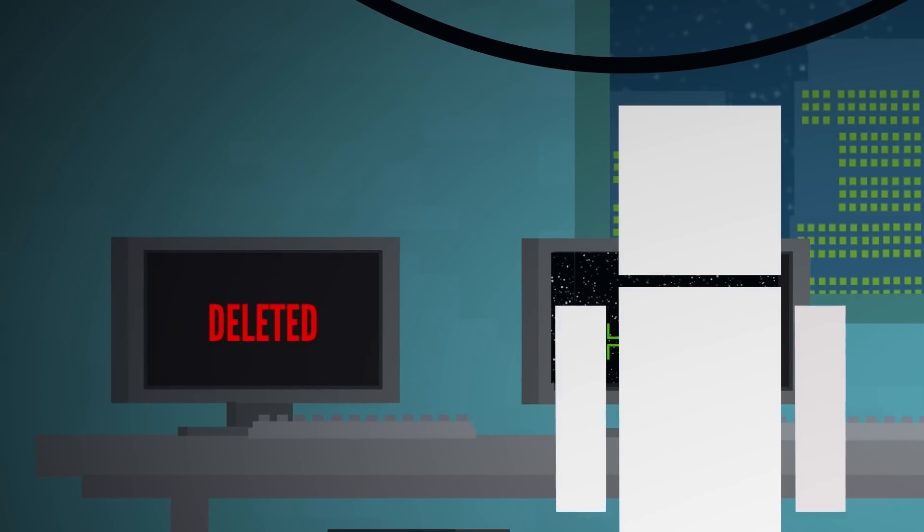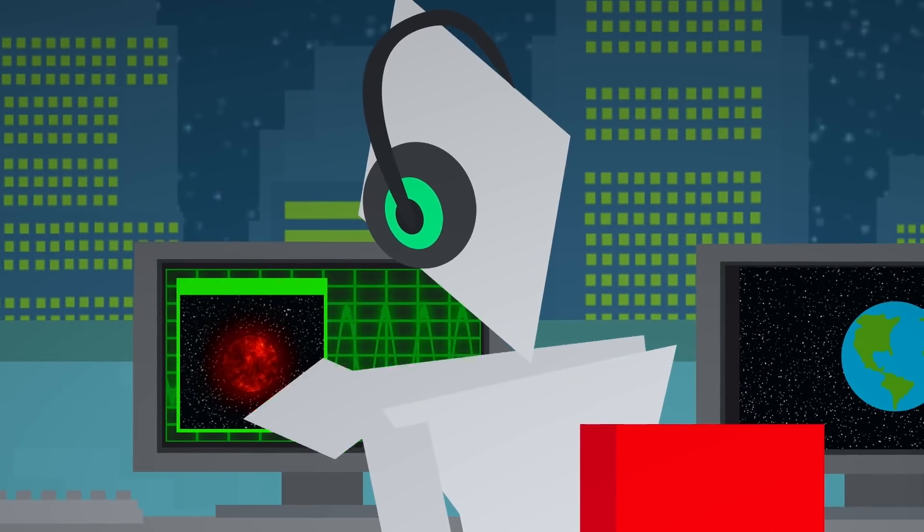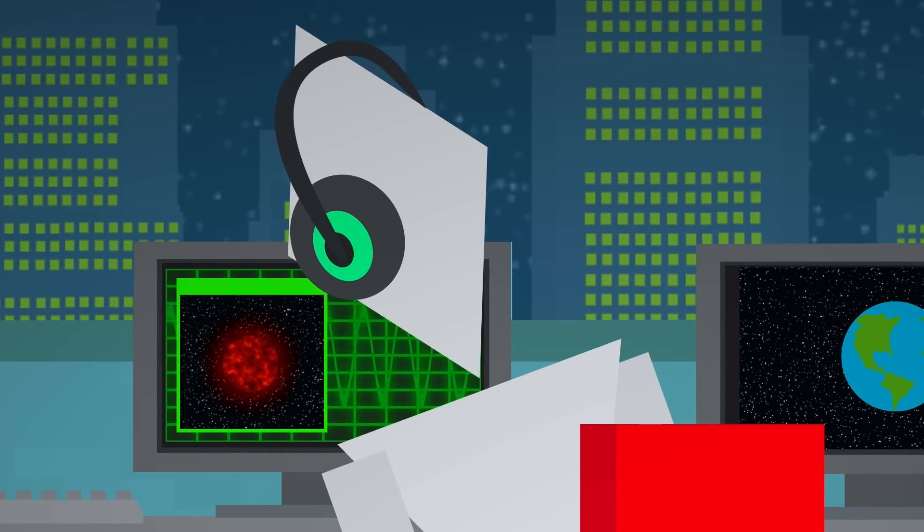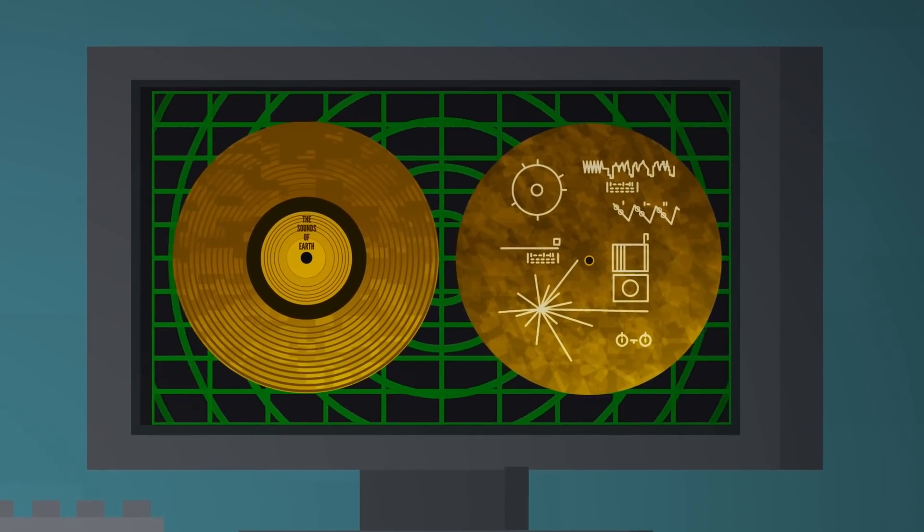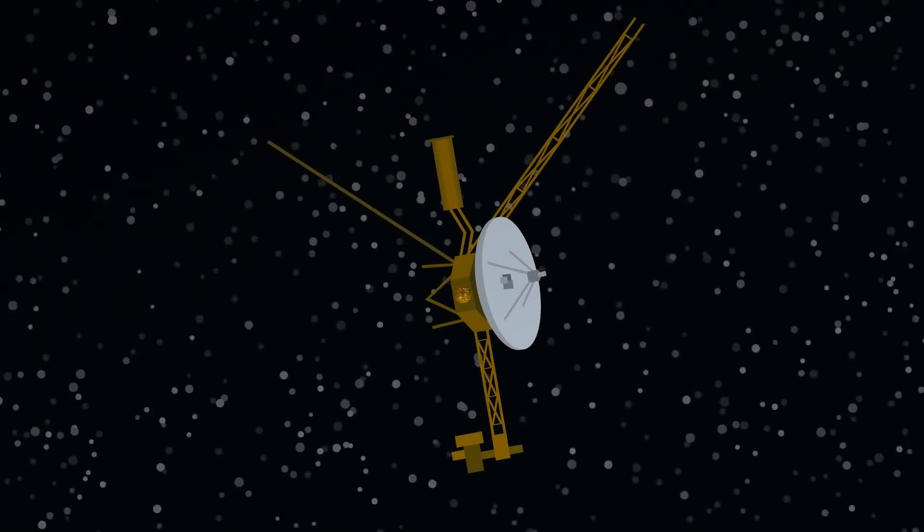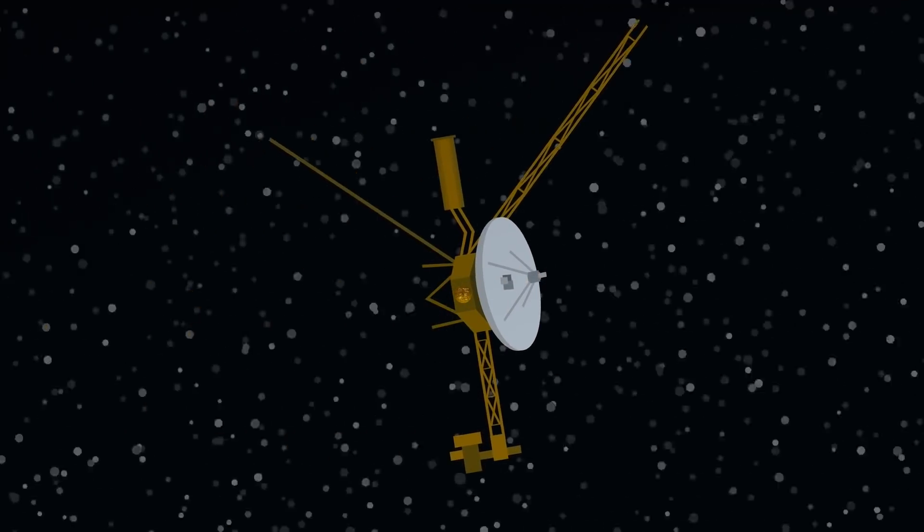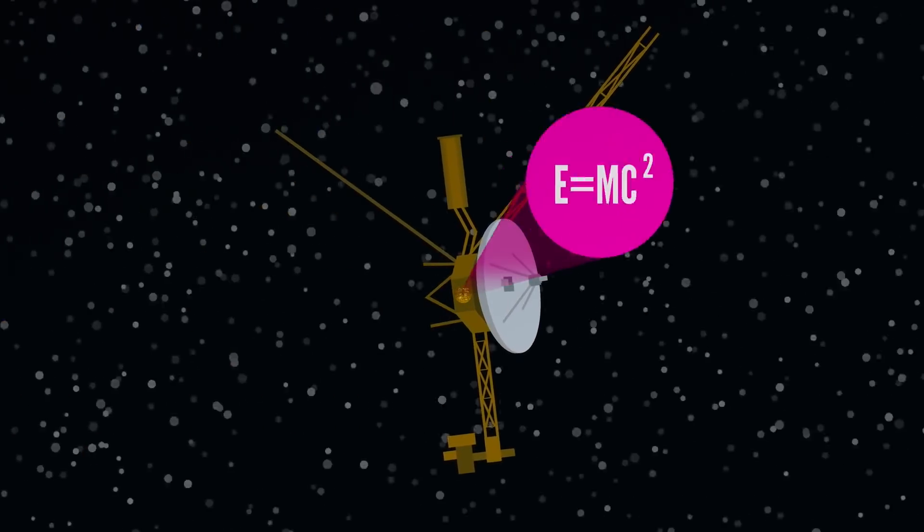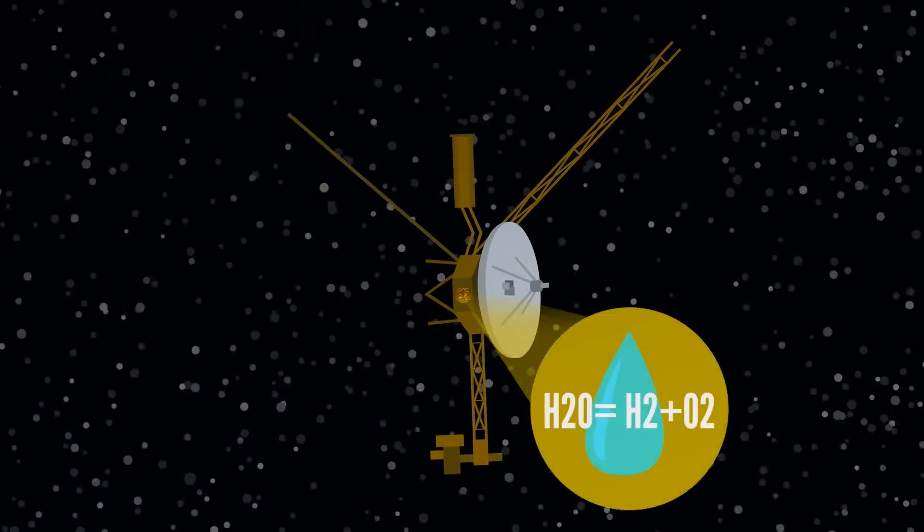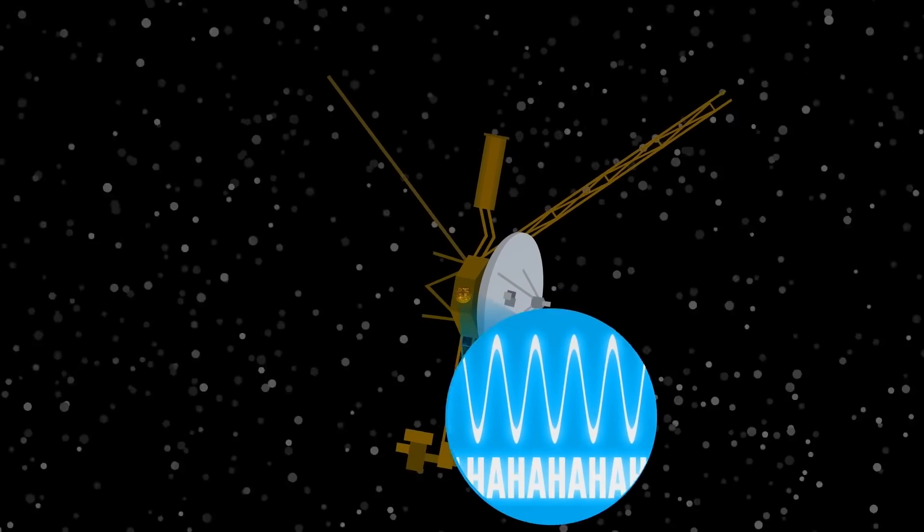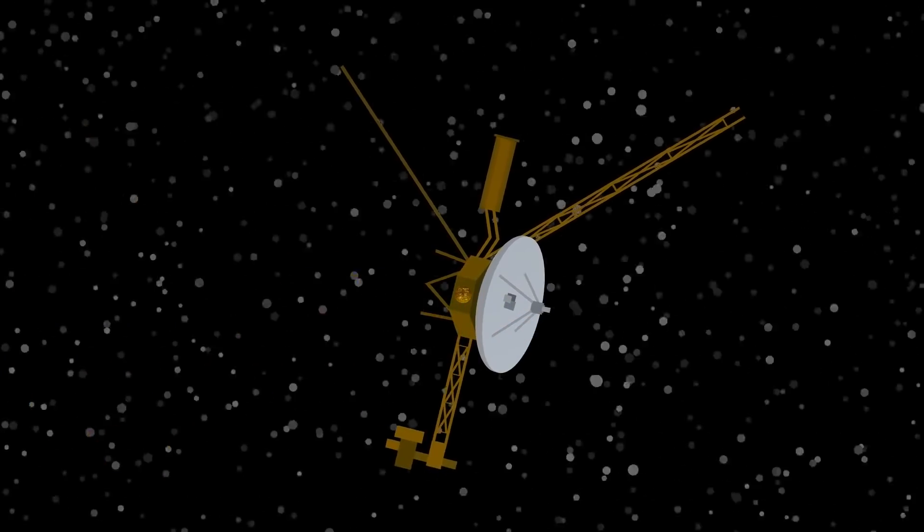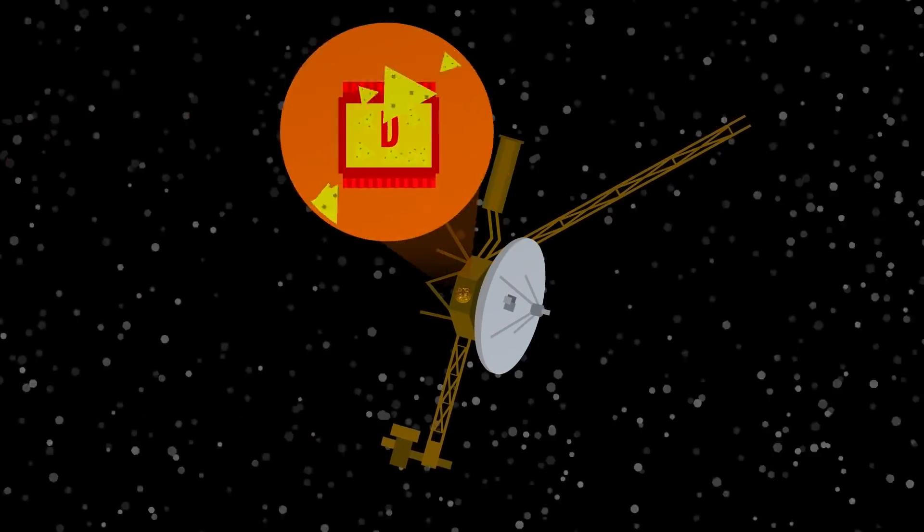And so far, that's what we've done. Between radio broadcasts beamed into space toward star systems and golden records filled with the sights and sounds of Earth aboard the Voyager spacecraft, humanity has sent docile messages that include universal mathematical concepts, chemical equations, pictures of parents and babies, sounds of laughter and greetings, and even advertisements for Doritos. Yeah.